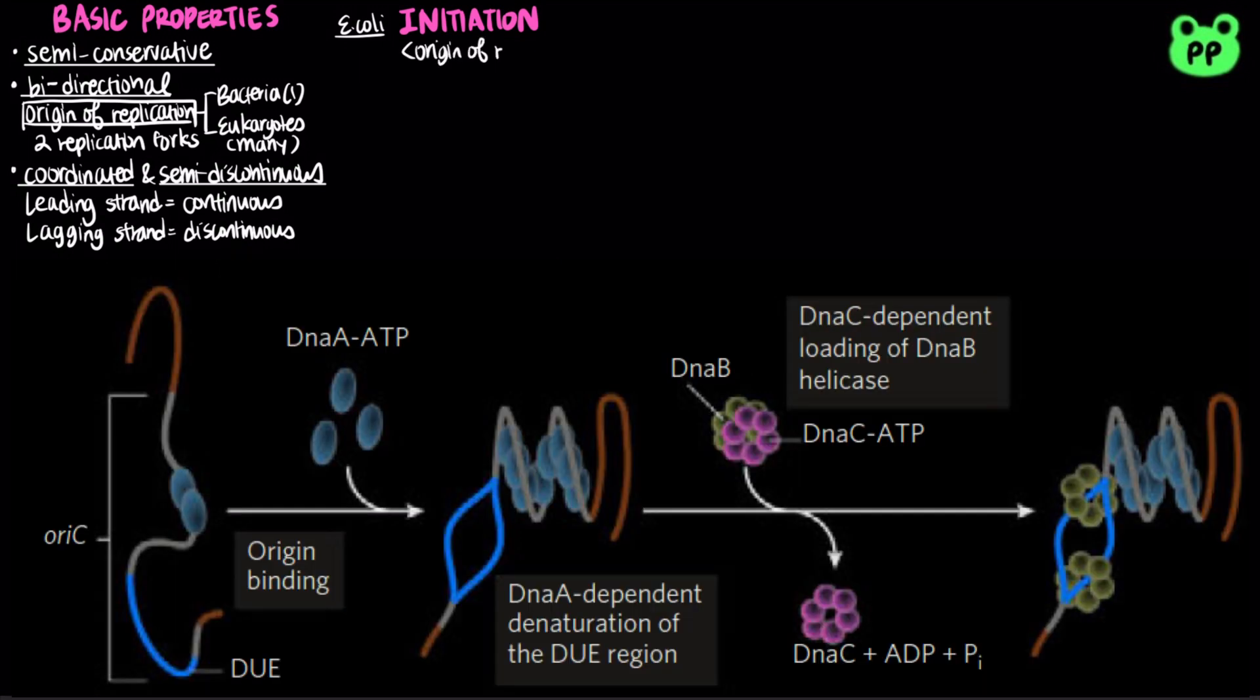The bacterial origin of replication is known as oriC, which consists two special sequences, the A-box and the DUE or DNA unwinding element. During initiation, the DnaA protein recognizes oriC by binding to the A-box. The strain caused by this binding triggers the denaturation of the DNA unwinding element region, which is rich in adenine and thymine base pairs. Recall that AT base pairs only have two hydrogen bonds and are easier to unwind than GC base pairs.